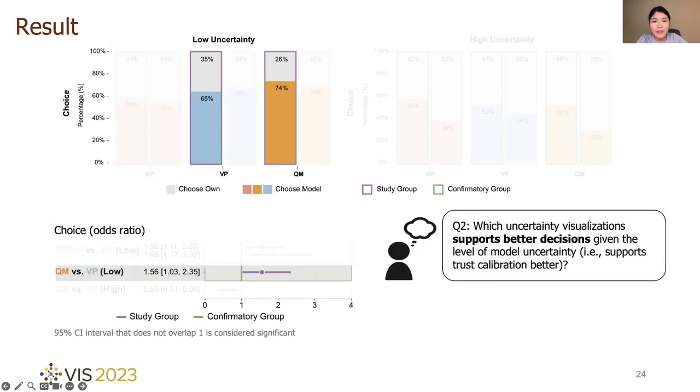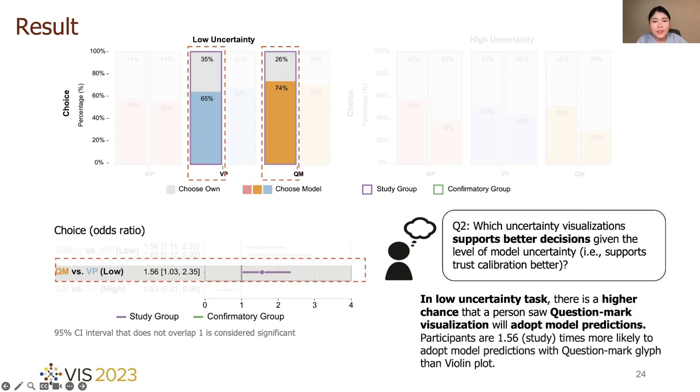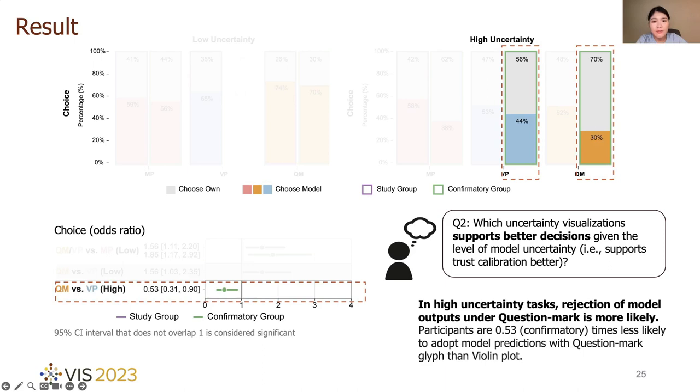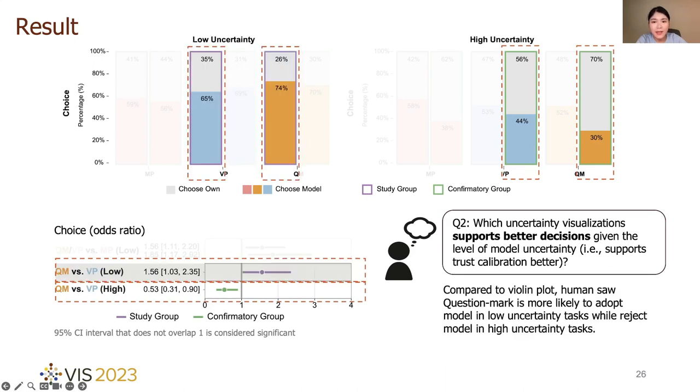When looking at the difference in human choice between two uncertainty visualizations, our study observed that in low uncertainty tasks, there is a higher chance that a person who saw question mark will adopt model predictions. While for high uncertainty tasks, rejection of model outputs under question mark condition is more likely. Thus, the question mark presentation shows more promise in calibrating trust based on model uncertainty.